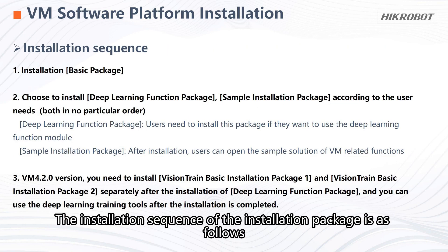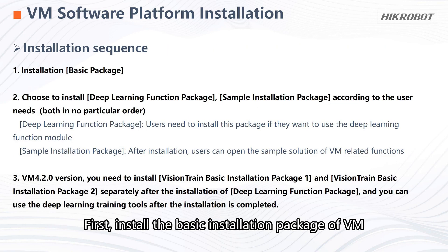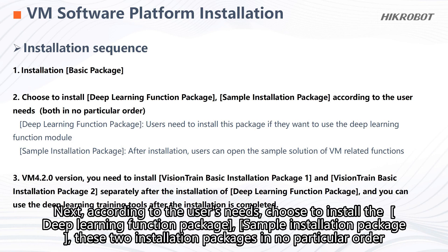The installation sequence of the installation packages is as follows. First, install the basic installation package of VM. Next, according to the user's needs, choose to install the deep learning function package and the sample installation package — these two in no particular order.